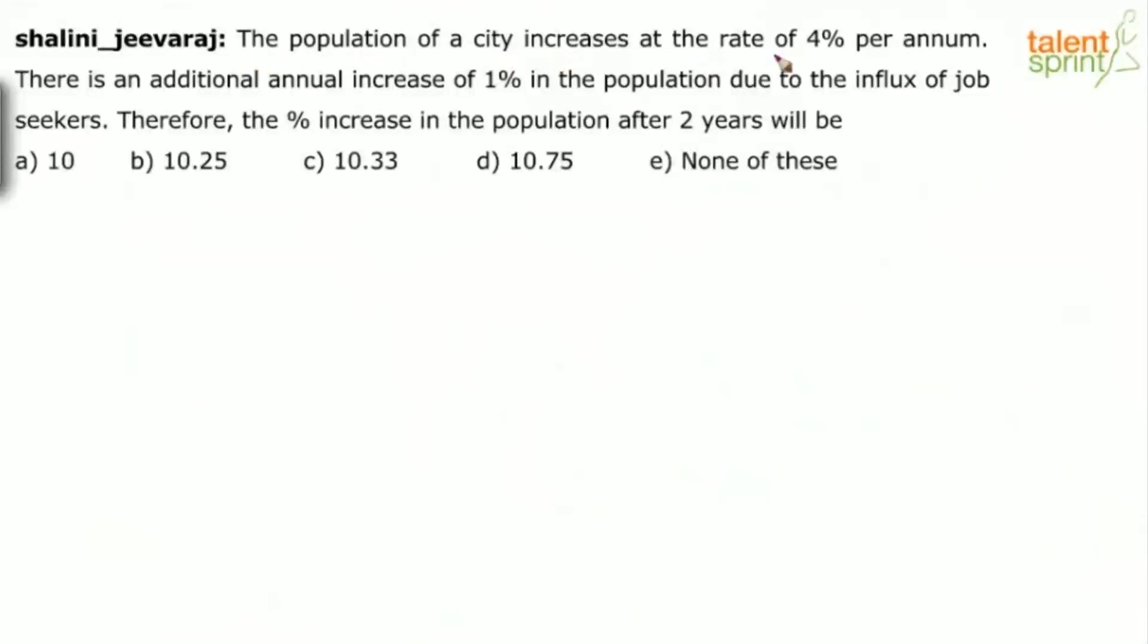The population of a city increases at the rate of 4% per annum. There is an additional annual increase of 1% in the population due to the influx of job seekers. So overall population increment is 4% plus 1%, which we simply take as 5%. Are you able to follow?